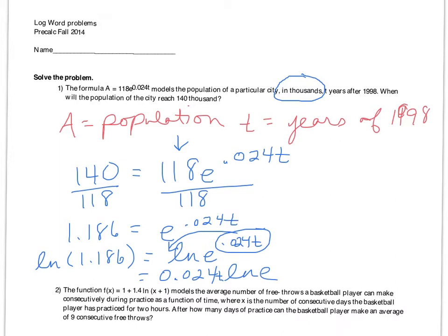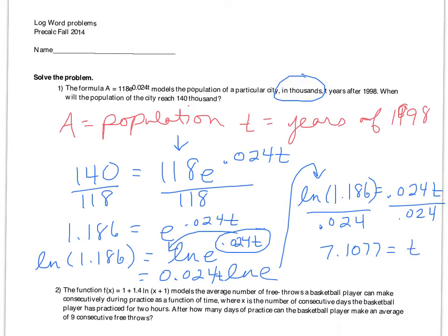So right now I have natural log of 1.186 equals 0.024 T and divide by your 0.024 to get T by itself. Notice it's not the natural log of 0.024. It's just 0.024. Hanging in there. You're doing good. I'm proud of you. All right, you get 7.1077. But for this word problem's sake, I just want to know how many years, so I'm going to round that to the nearest whole number of 7 years.